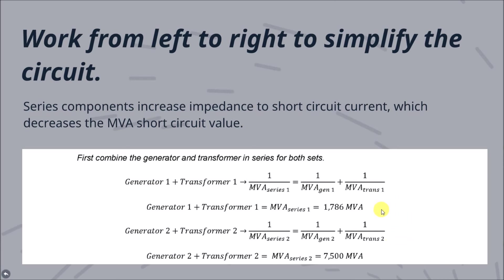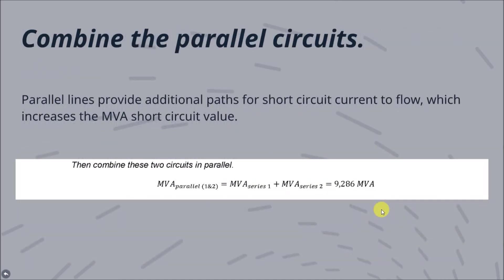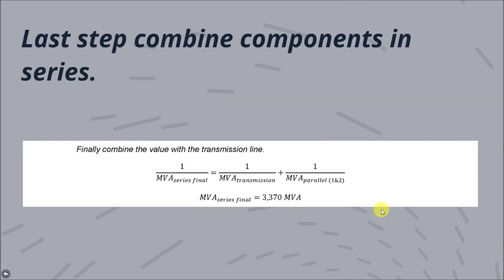First, you want to work from left to right to simplify the circuit. First, combine the generator and transformer in series for both sets. Notice that the series components will increase impedance to short-circuit current, which in turn decreases the MVA short-circuit value.